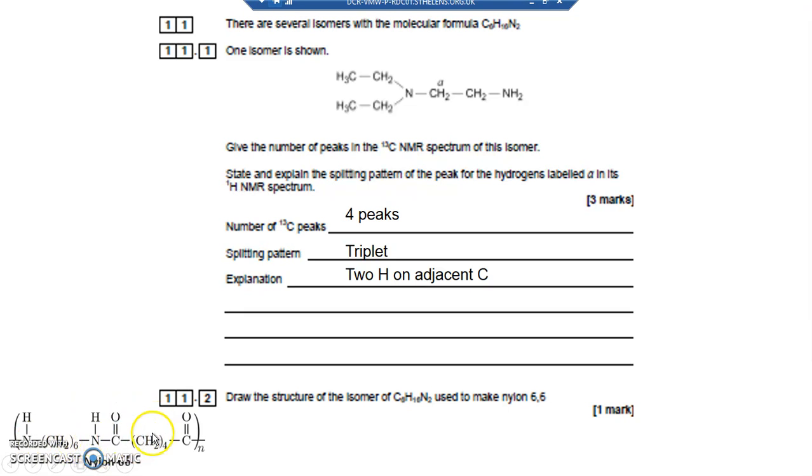And then on the other monomer, you've had a carboxylic acid group or an acyl chloride group. If it were a carboxylic acid group on either end, it would release water. If it was an acyl chloride, a COCl, it would release HCl.